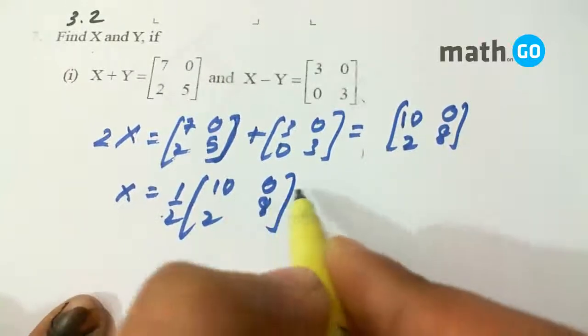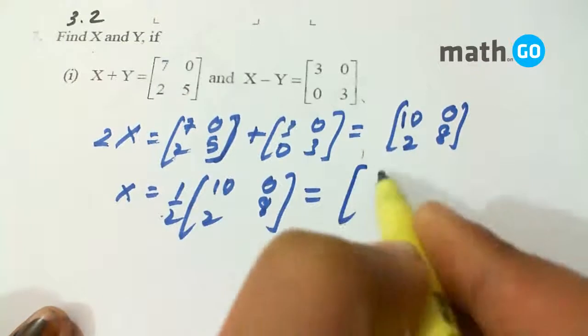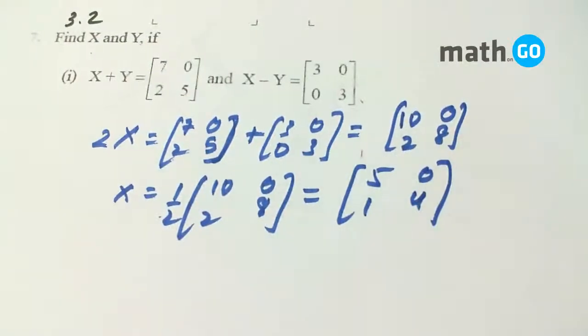Since it is a scalar multiplication, it goes with every element. So [5, 1, 0, 4]. This is the answer.